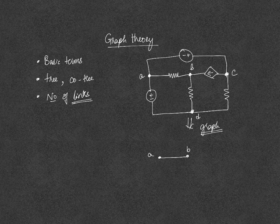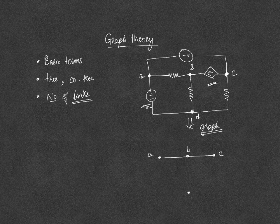From B to C, you have a dependent current source, so here B to C there is a link. And from A to D, you have a voltage source, so we will take this point as D. This will be the link and this will be the branch.